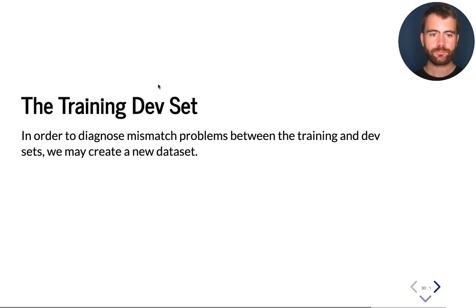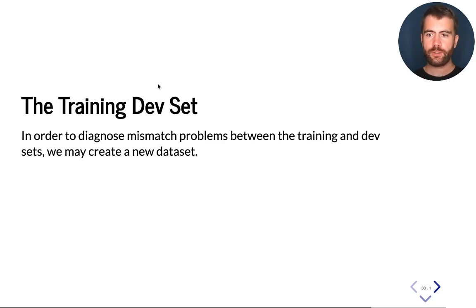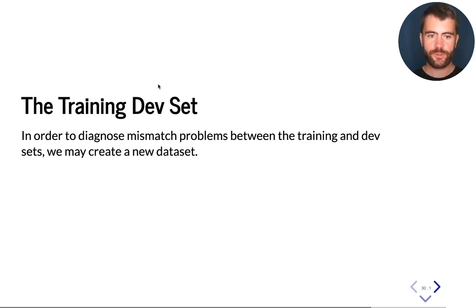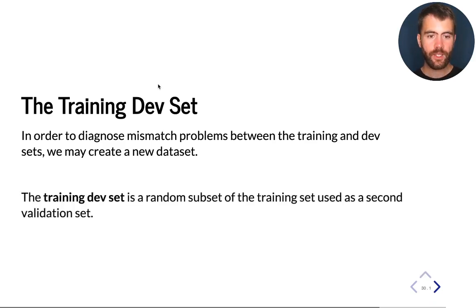In order to diagnose mismatch problems between the training and the development set, we can create a special new data set. We call this the training-dev set — it will be something between the training and the development set. To form this data set, we take a random subset of the training set and use it as a second validation or development set.